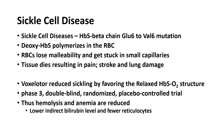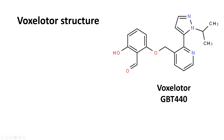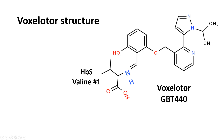I found the original paper on the structure of GBT440, which is the precursor and code name for voxelotor, originally published in ACS Medicinal Chemistry Letters back in 2017. Here is the structure of voxelotor, or GBT440. It reacts with the N-terminus valine — not the valine that gets mutated, but the valine naturally at position number one of the beta chain N-terminus. It reacts one-to-one at that N-terminus.